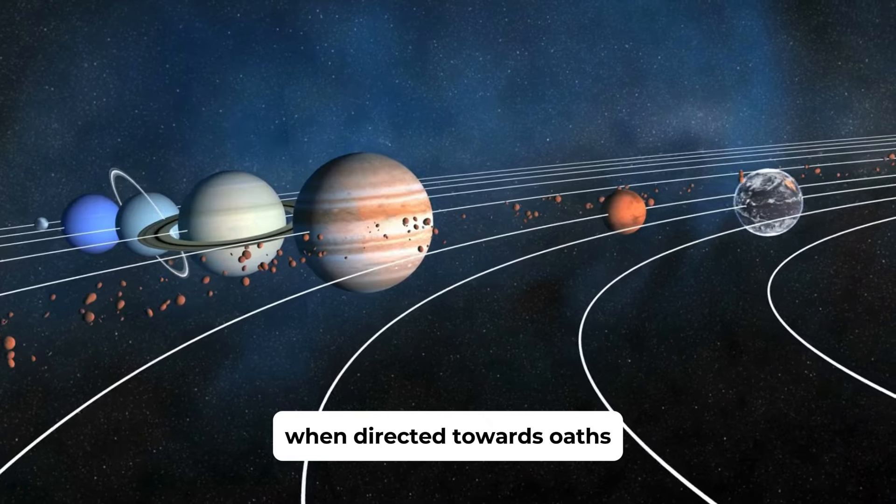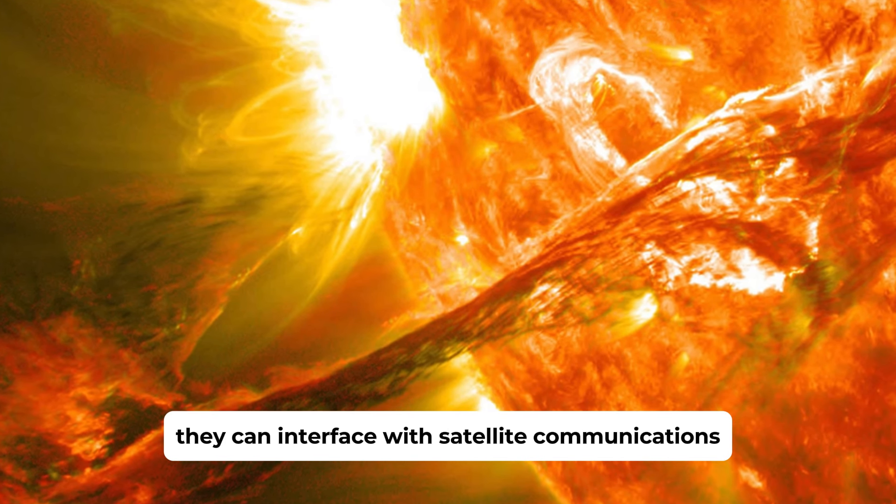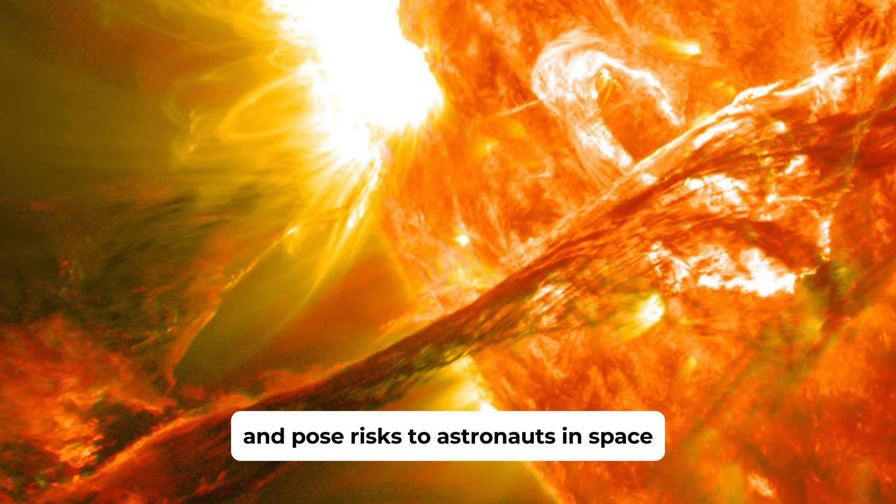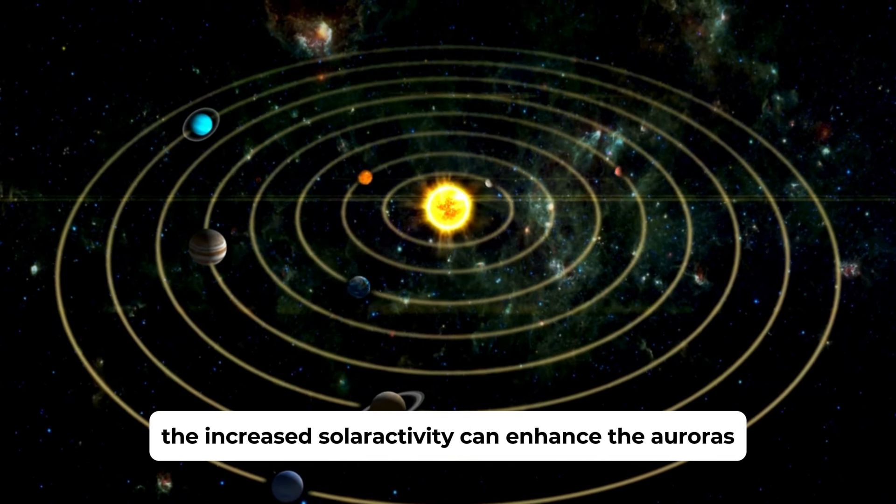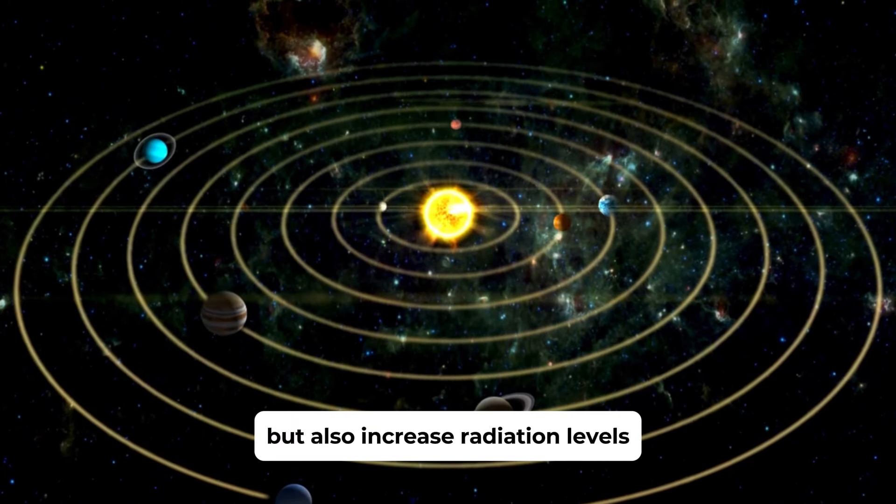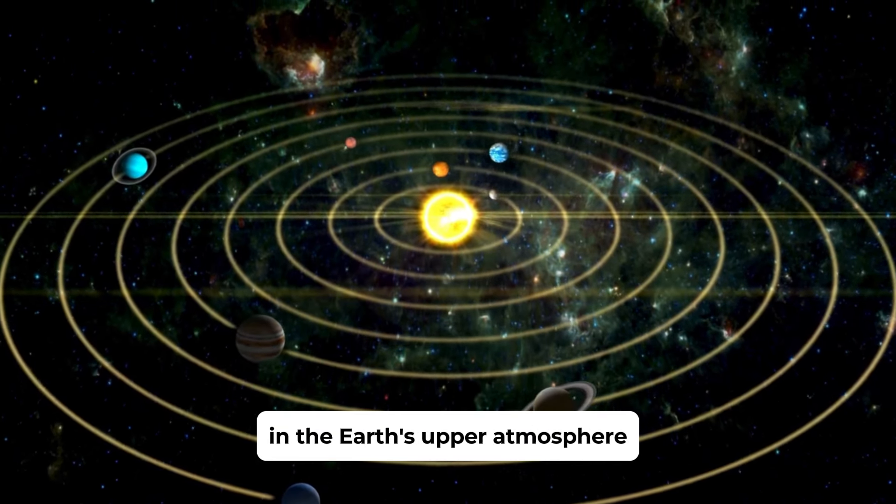When directed towards Earth, they can interfere with satellite communications, disrupt power grids, and pose risks to astronauts in space. Additionally, the increased solar activity can enhance the auroras but also increase radiation levels in the Earth's upper atmosphere.